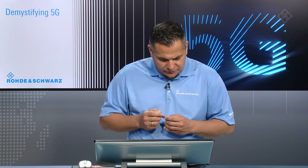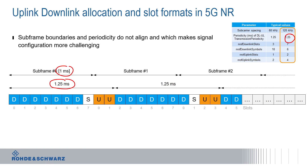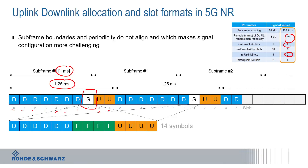Going back to the configuration, as defined there are seven downlink slots — you can count them here — and two uplink slots, shown here in orange. With ten total slots, there is one remaining slot, which we can call a special slot, positioned in between the downlink and uplink slots, as shown in the graphic. The special slot is configured using the other two values from the table: six symbols in downlink and four symbols in uplink.